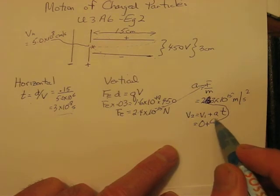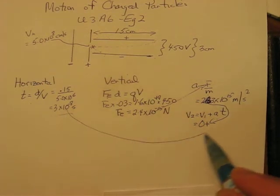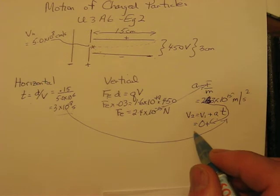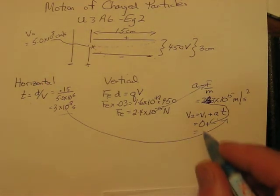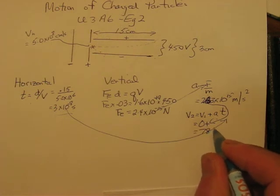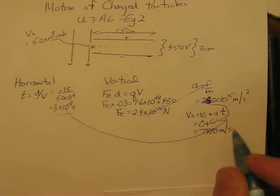And the time that it's between the plates is this number over here. That will give us a specific velocity. In this case, it's about 7,890 meters a second heading upward.